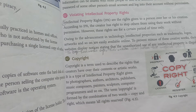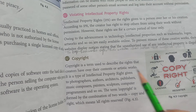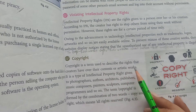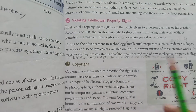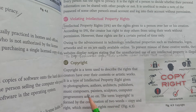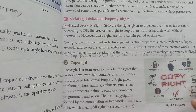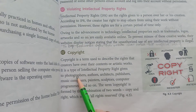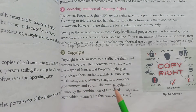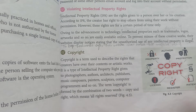So we can also use content on a website. Now, what is copyright? Copyright can be given to photographers, authors, architects, publishers, music composers, painters, sculptors, computer programmers, and so on. The term copyright is formed by combining two words — copy and right — which means all rights reserved. That means you can't copy and sell or use the copyrighted work. If you have made something, you can patent it, and then it becomes copyrighted.